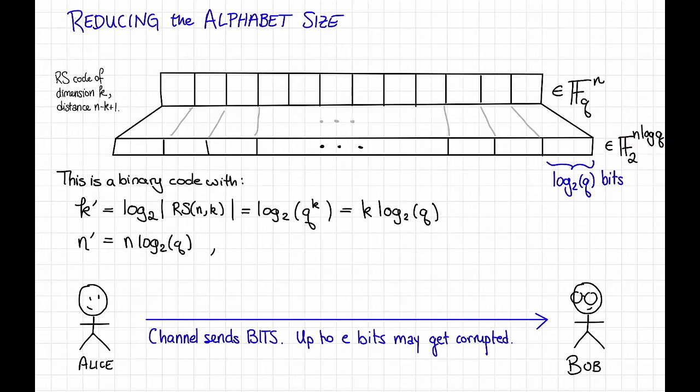And what's the distance? Why don't you pause the video right now and think about the best bound you can get on the distance of this thing as a binary code. Okay, so a priori, the best bound we can get on the distance, d prime,